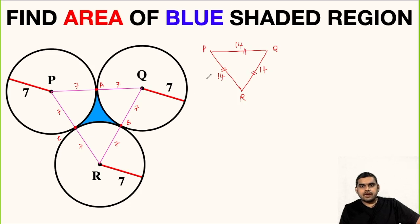And we know the property of an equilateral triangle: that all the interior angles are equal, and they are equal to 60 degrees. So this angle is 60 degrees, this angle is 60 degrees, and here also this is 60 degrees.